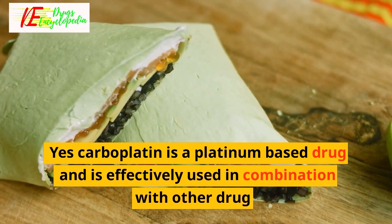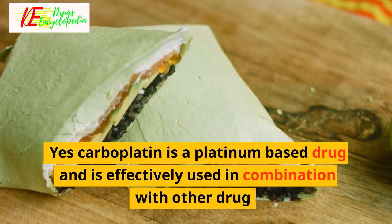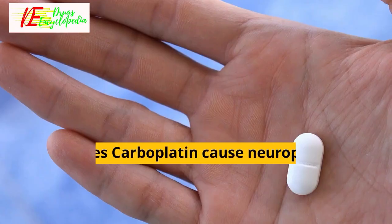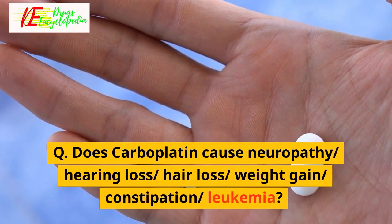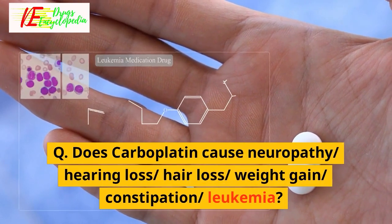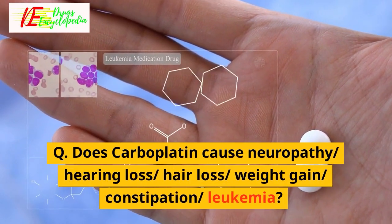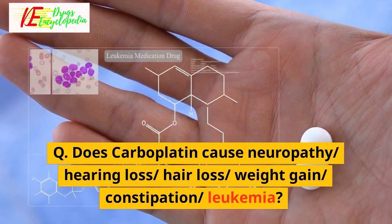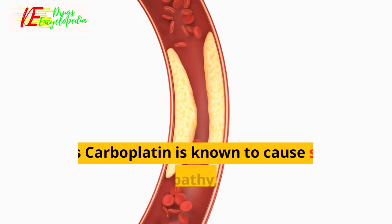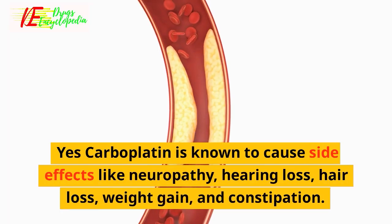Q: Is carboplatin a platinum-based drug? Yes, carboplatin is a platinum-based drug and is effectively used in combination with other drugs. Q: Does carboplatin cause neuropathy, hearing loss, hair loss, weight gain, constipation, or leukemia? Yes, carboplatin is known to cause these side effects.